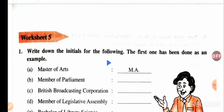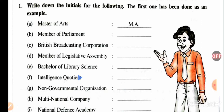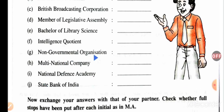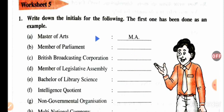Write down the initials for the following — the first one has been done for you. Master of Arts: MA. Member of Parliament: MP. British Broadcasting Corporation: BBC. Member of Legislative Assembly: MLA. Bachelor of Library Science: BLS. Intelligence Quotient: IQ. Non-Governmental Organization: NGO. Multinational Company: MNC. National Defense Academy: NDA. State Bank of India: SBI. Always use a full stop after writing the abbreviation.